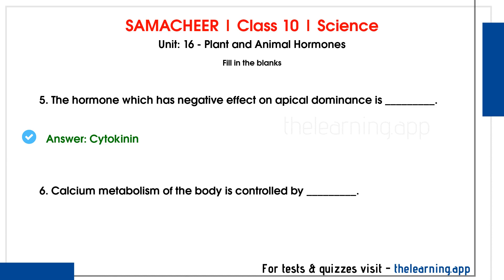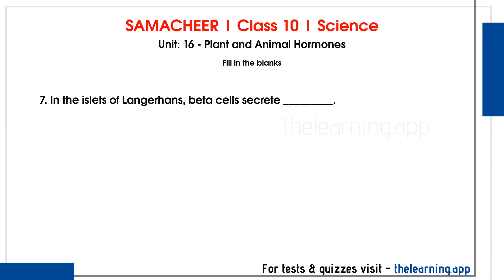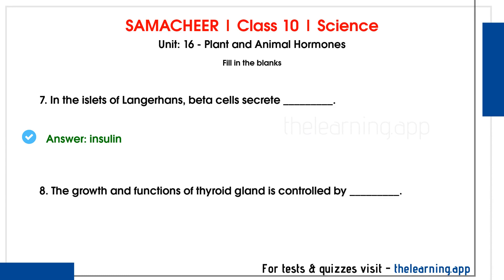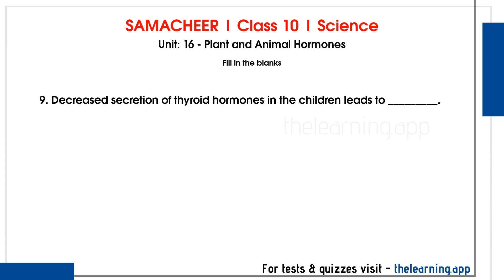Sixth question: Calcium metabolism of the body is controlled by dash. Correct answer is parathormone. Seventh question: In the islets of Langerhans, beta cells secrete dash. Correct answer is insulin. Eighth question: The growth and functions of the thyroid gland is controlled by dash. Correct answer is thyroid stimulating hormone, TSH. Ninth question: Decreased secretion of thyroid hormone in children leads to dash. Correct answer is cretinism.